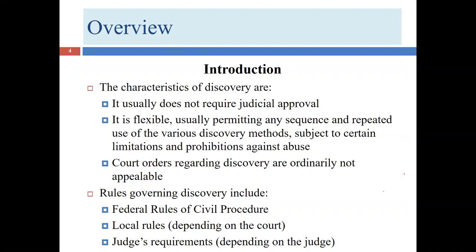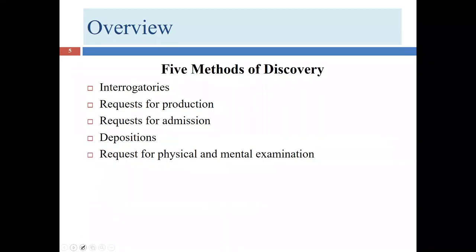When looking at discovery, we look at the Federal Rules of Civil Procedure, local rules, and individual judges' requirements — the most local rules being what a particular judge does with discovery issues. We have five tools for discovery, and what follows is a pretty common order for using them, though as noted, there's no set order.